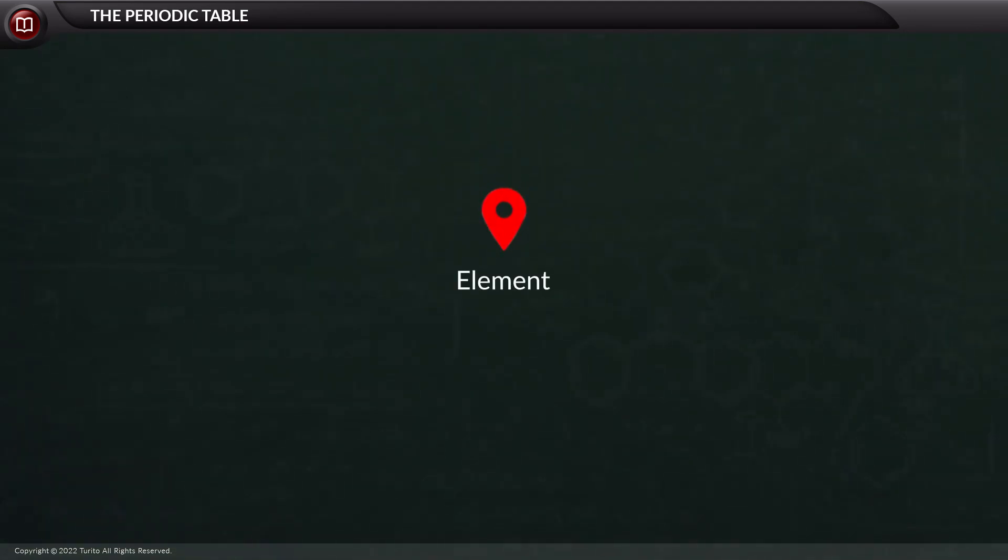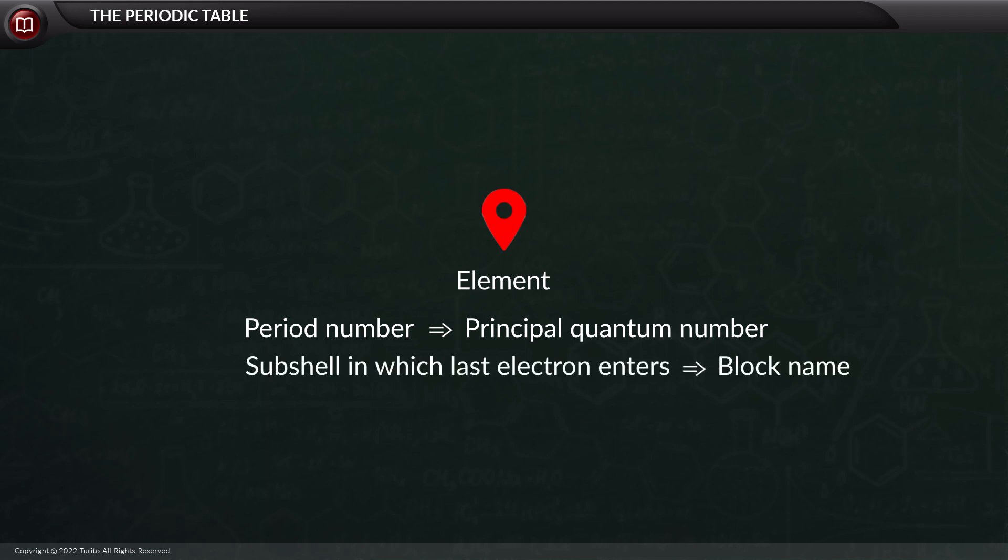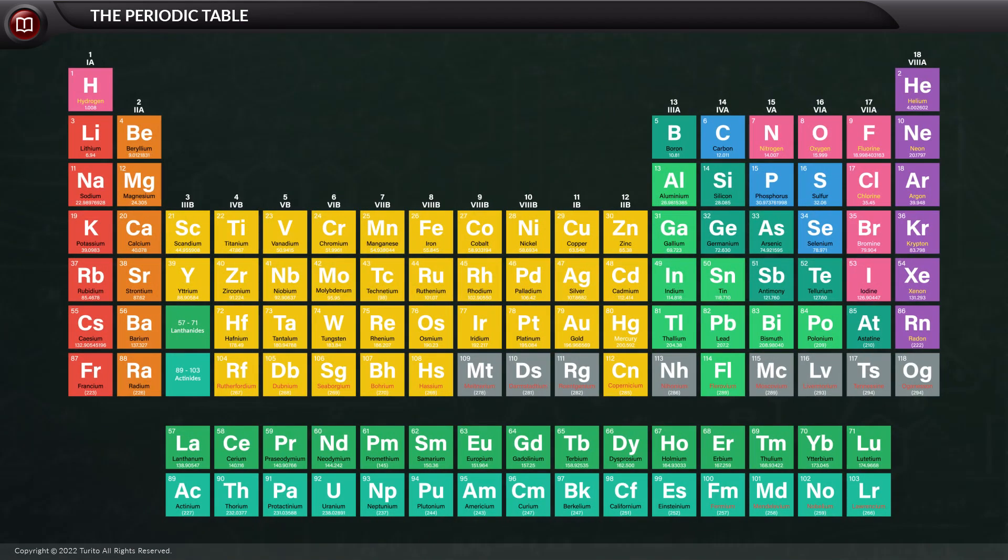Let us learn how to find the address of an element in the periodic table. Usually, the period number of an element corresponds to the highest principal quantum number, and the block name is dependent on the subshell in which the last electron is entering. Now, how would you define the various blocks?